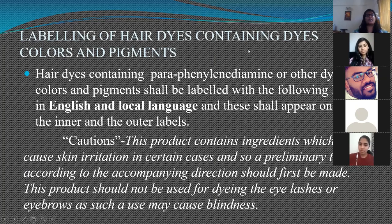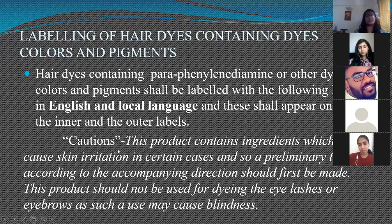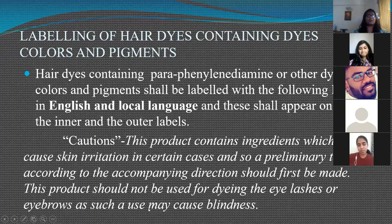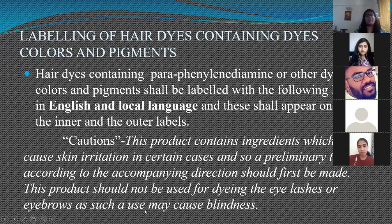Labeling of hair dyes containing dye colours and pigments is very important. The inner and outer labels should have certain cautions mentioned in both English and the local language. Hair dyes containing paraphenylenediamine or other dyes and pigments should carry the precaution that the product contains ingredients which may cause skin irritation, a preliminary sensitivity test should be done first, and the product cannot be used for dyeing eyelashes or eyebrows as this may lead to blindness.